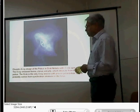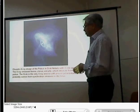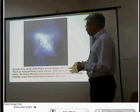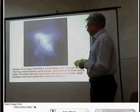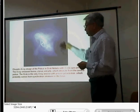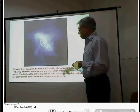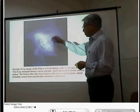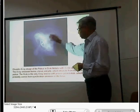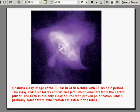When electrons get accelerated in the magnetic field, they radiate and produce radiation ranging all the way from radio to gamma rays. It is one of the best studied objects in the sky, and this Chandra image shows details comparable to what you observe in visible light.